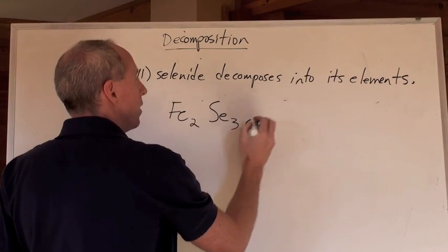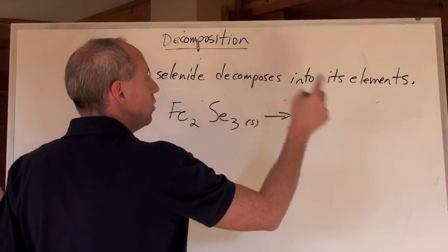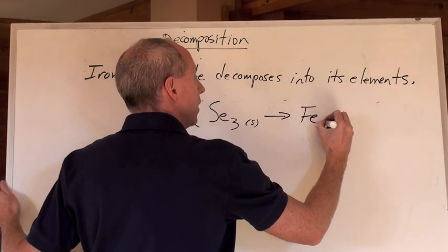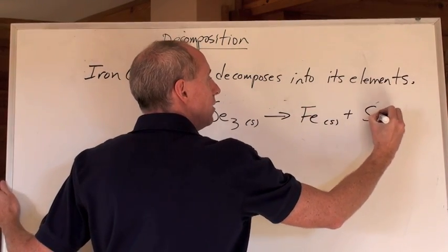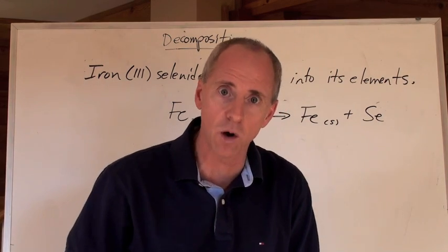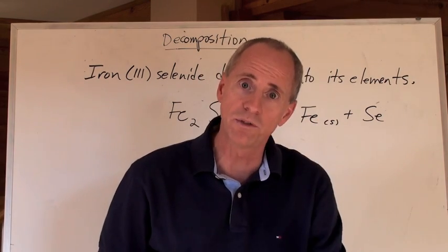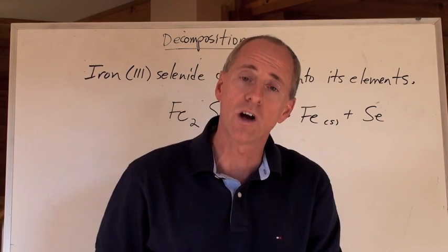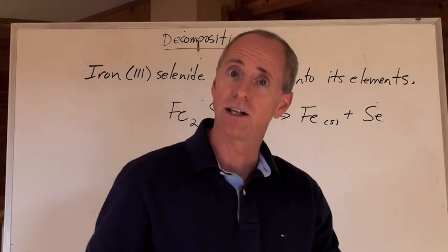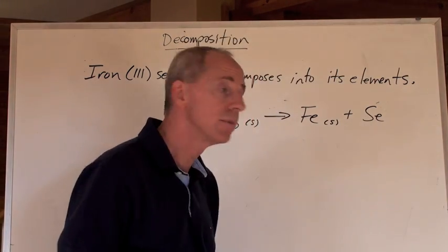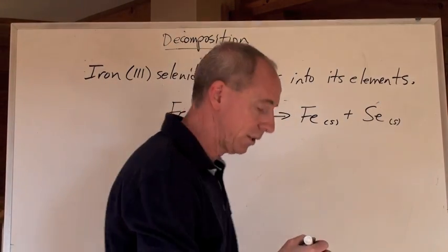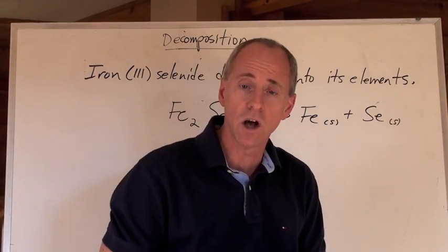Iron(III) selenide decomposes into its elements. What are its elements? Fe is one of the elements — that's a solid — and Se is the other one. Is it Se₂? No. Se₄? No. Se₈? No. Because you memorized — not group 7. Those are all the diatomics. S₈, P₄ — everything else is one. Selenium is a solid at room temperature.